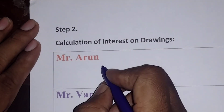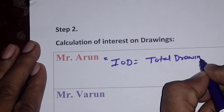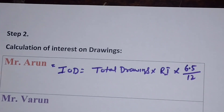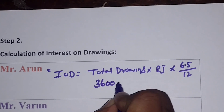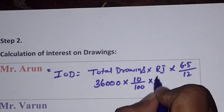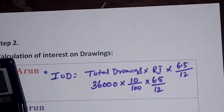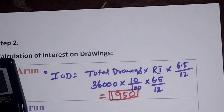For Mr. Arun, who draws on the 1st of every month: Interest on drawings = Total Drawings × Rate of Interest × 6.5/12 = 36,000 × 10/100 × 6.5/12 = Rs. 1,950.